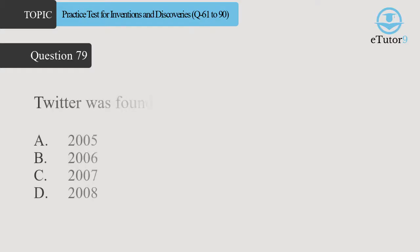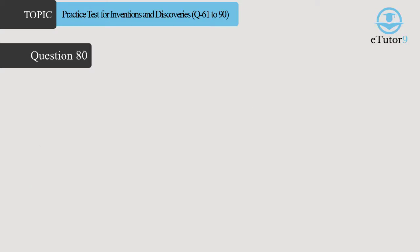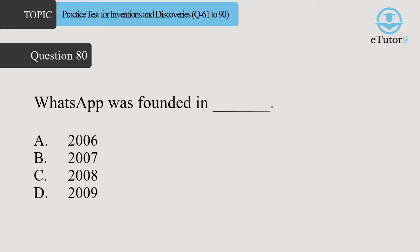Question 79. Twitter was founded in Dash. Answer is D. 2006. Question 80. WhatsApp was founded in Dash. Answer is D. 2009.